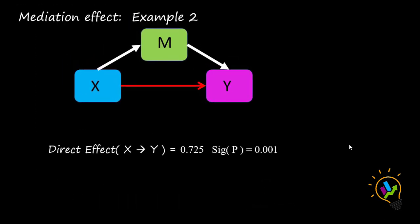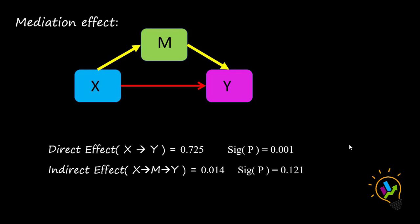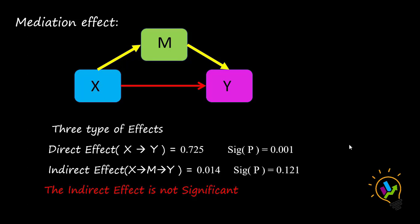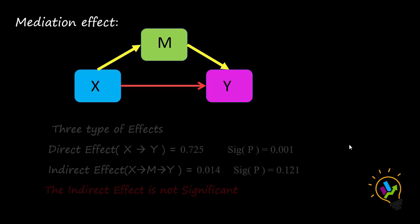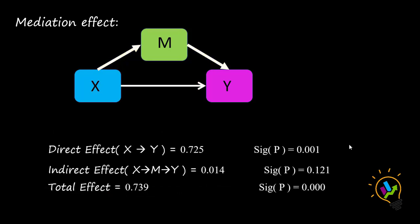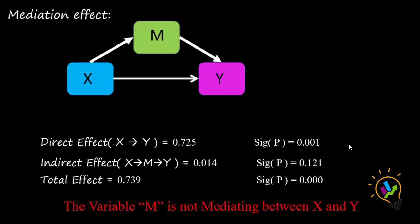Now let us do a second type of example. In this case, with a separate dataset, the direct effect of X on Y is 0.725 with a p-value of 0.001, which is significant. The indirect effect — X on Y through M — is 0.014, with a p-value of 0.121, which is not less than 0.05. So this is not significant, meaning M is not mediating between X and Y. The total effect is 0.739, which is significant — nearly equal to the direct effect.